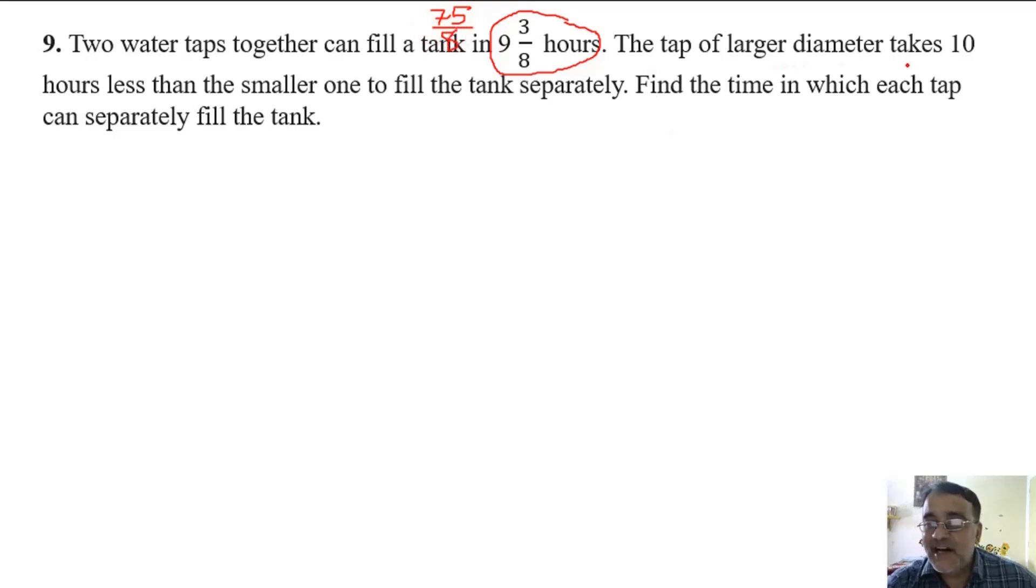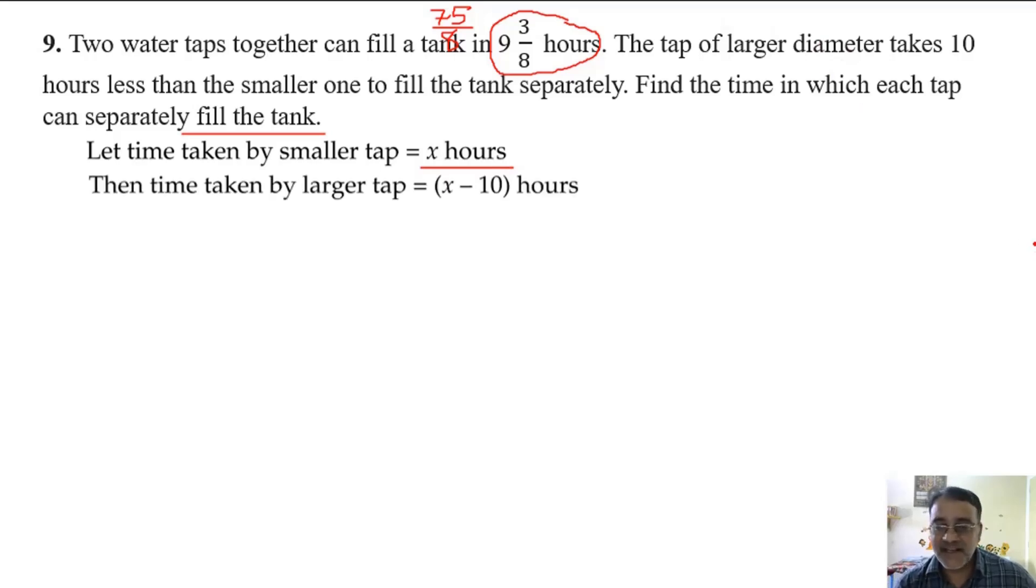The tap of larger diameter takes 10 hours less than the smaller one to fill the tank separately. Find the time in which each tap can separately fill the tank. We will take time taken by the smaller tap is x hours. So larger tap will take x minus 10 hours.